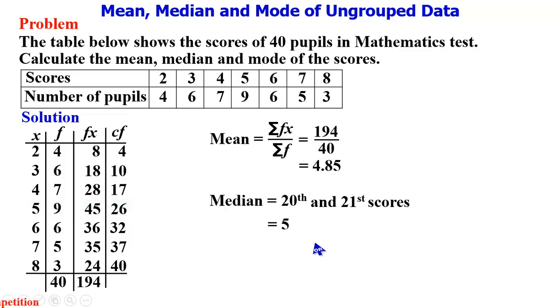We are done with the median. We then go ahead to calculate the mode. For the mode, we go to the frequency column and then look for the highest frequency. The highest frequency here is 9. This is the modal position, and the corresponding score is 5. Therefore, the mode of this distribution is 5.